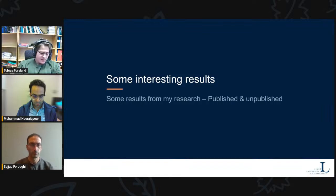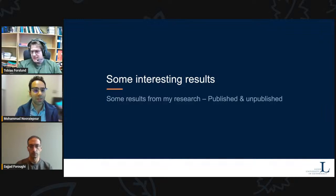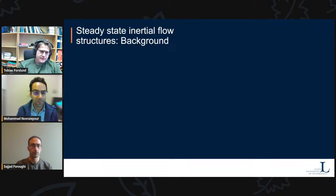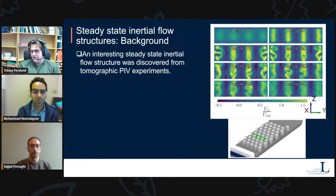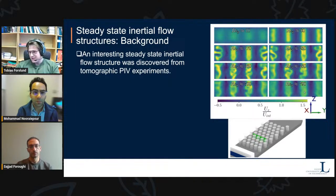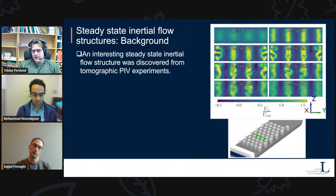Now let's get into some interesting results, some published and some unpublished. First, I want to talk about steady-state inertial structures. An interesting steady-state inertial flow structure was discovered during our tomographic PIV experiments. As the Reynolds number is increased, we go from viscous diffusion destroying all structures, up to turbulence destroying all structures, with a lot of interesting physics in between. Notably, we see epsilon-shaped profiles appearing around Reynolds number 170 that slowly disappear as Reynolds number is further increased.